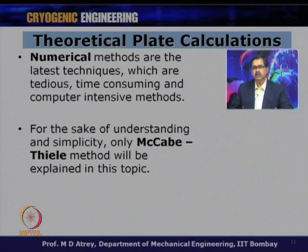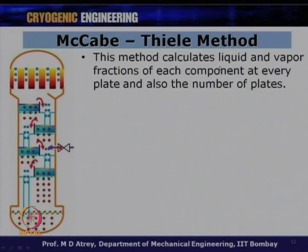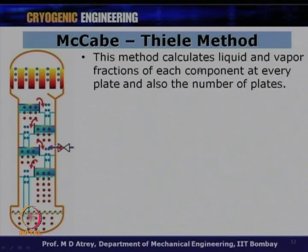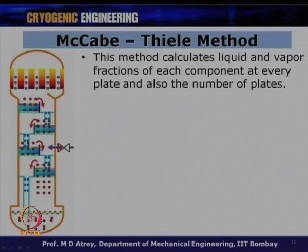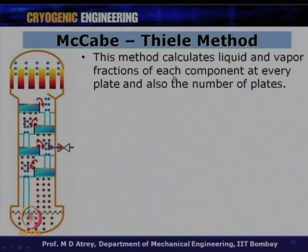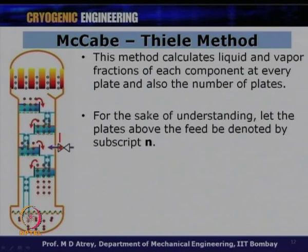For example, if I want 98% or 95% purity, how do I design a distillation column? The McCabe-Thiele method calculates the liquid and vapor fraction of each component at every plate and also the number of plates. We march up or down from the feed point, and at every plate we calculate the liquid and vapor fraction of each component in this binary mixture, ultimately giving us the number of plates required for a given purity.